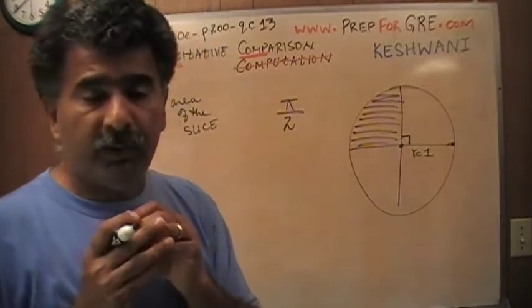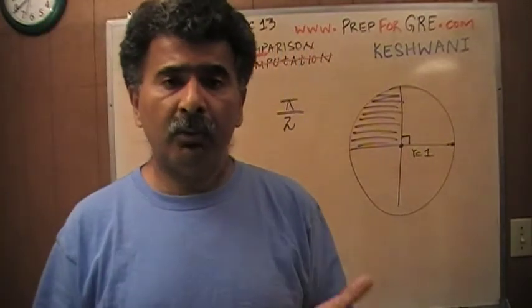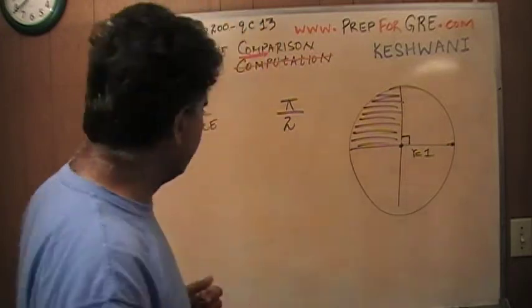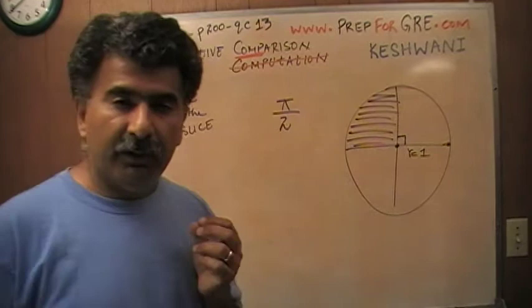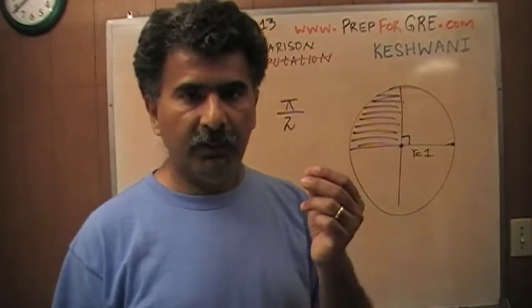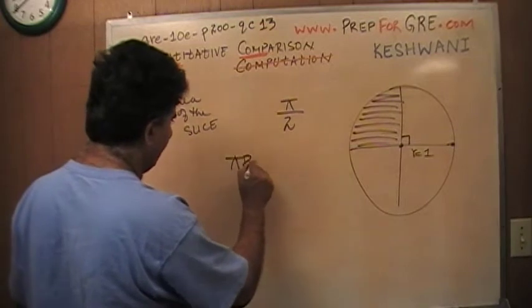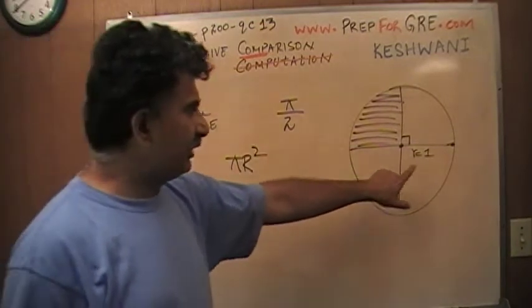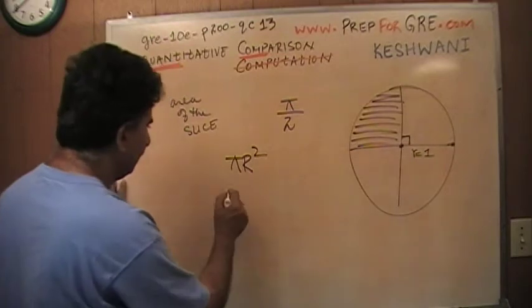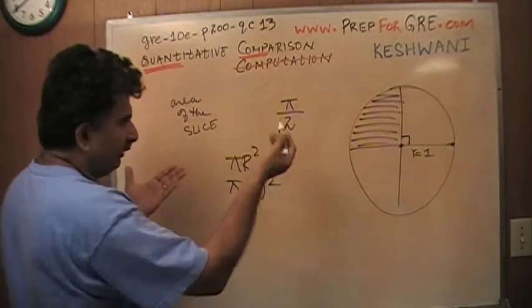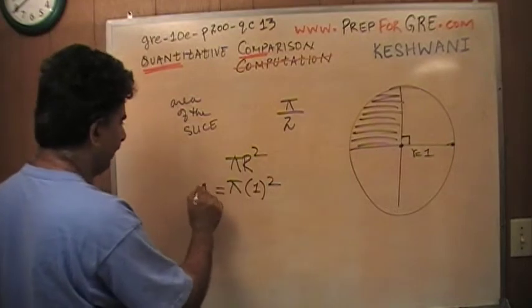So all you have to do is figure out the area of the whole circle. Once you figure out the area of the whole circle, take a quarter of it and then compare it against π over 2. Let's take a look at it. How do you figure out the area of the circle? You have to know the formula. The formula for area of the circle is πr². R is your radius, which in this case is 1. So it's basically π times 1 squared. In other words, the area of the circle is π.